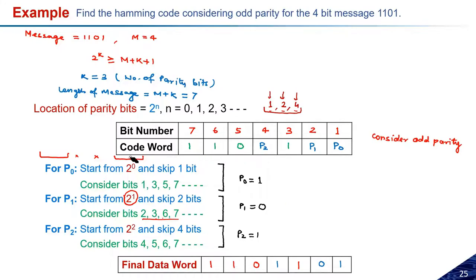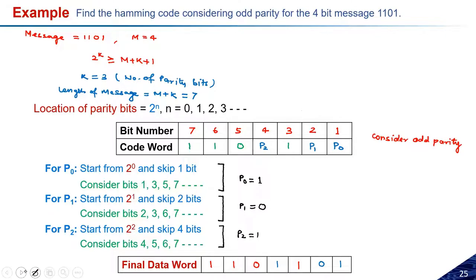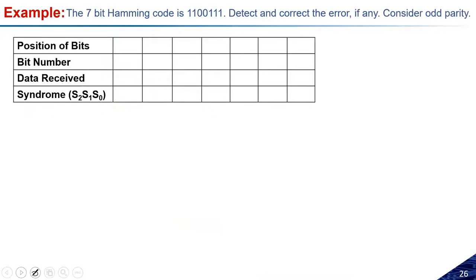This is how we generate the Hamming code at the transmitter side. Now let us consider the second example: suppose we already have a Hamming code and need to check whether there is an error, and if so, which bit position has the error and how to correct it. Suppose I have a seven-bit Hamming code: 1 1 0 0 1 1 1, and I want to detect and correct the error if any, considering odd parity.